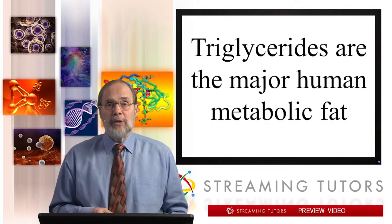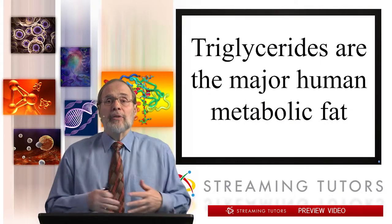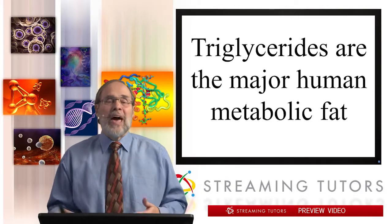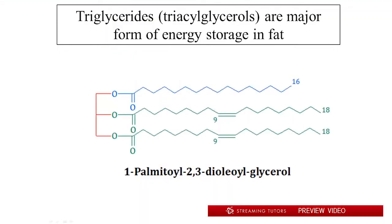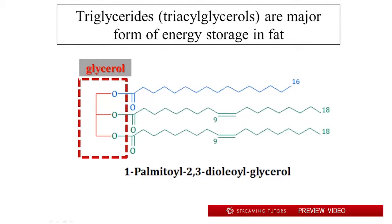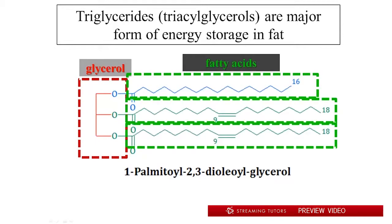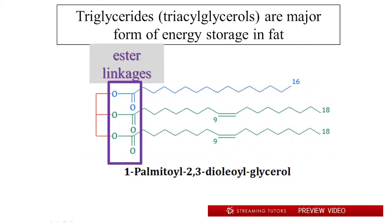Let's first remind you that triglycerides are, by far, the major human metabolic fat — the fat we use for catabolic generation of energy. A typical triglyceride or triacylglycerol molecule is diagrammed here; we have seen them before in earlier segments. It has a three-carbon backbone of glycerol, where each of the three carbons has a hydroxyl group locked in an ester linkage with the three fatty acids. Let me zero in and point out the three ester linkages that make up this triacylglycerol molecule.